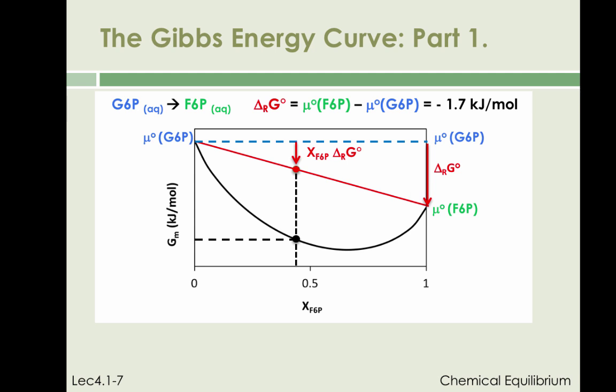So we see qualitatively that when the reaction is only partially completed, the change in the standard Gibbs energy is represented by the smaller red arrow extending to the red dot. We show below that the magnitude of the change represented by the small red arrow is the mole fraction of fructose 6-phosphate in the reactive mixture times delta_RG standard.